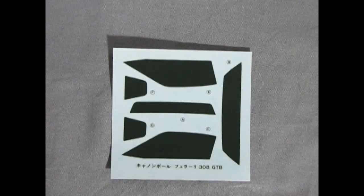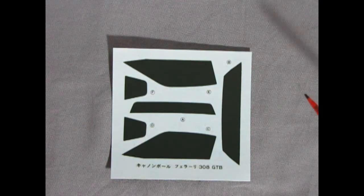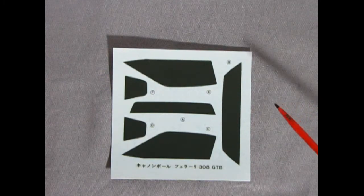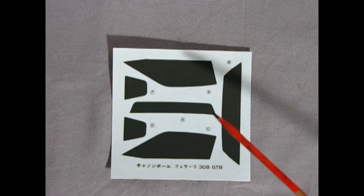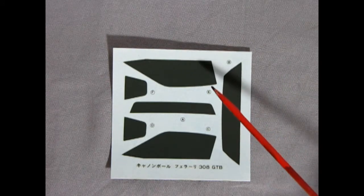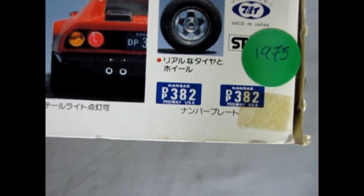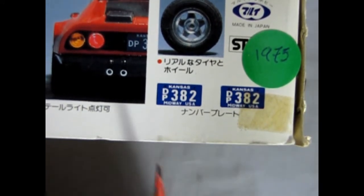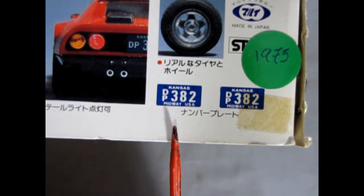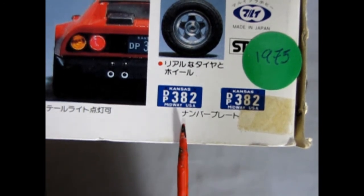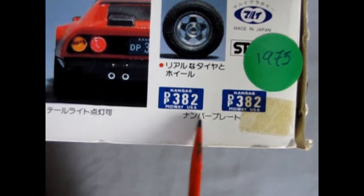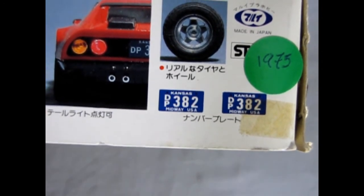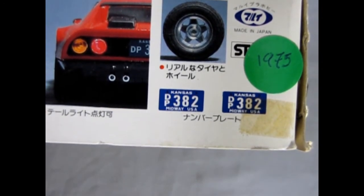Last but not least we have this decal sheet and I think its intention is to block out all the windows and make this car look like it is tinted windows if you don't want to have the interior details. But you may be wondering where the license plates are. Well here are the Kansas DP382 license plates which are on the actual box lid which means that when you cut these out you'll have the thickness of the cardboard to represent the thickness of the license plate.